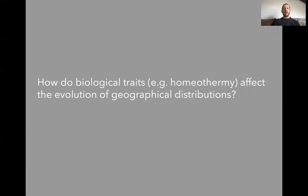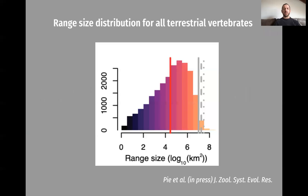We can also ask how biological traits such as homeothermy affect the evolution of geographical distributions — the focus of another study currently in press. This histogram shows range sizes for terrestrial vertebrates. As expected, we see an approximately log-normal distribution, truncated on the right because species usually can't be more widely distributed than entire continents, shown here as gray lines.